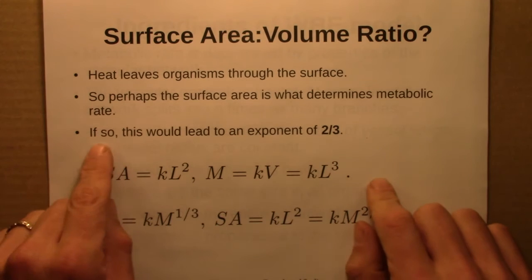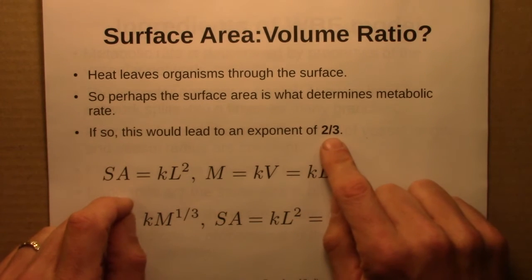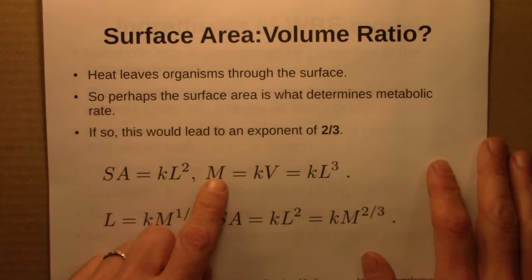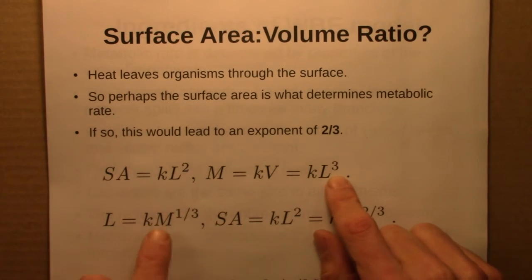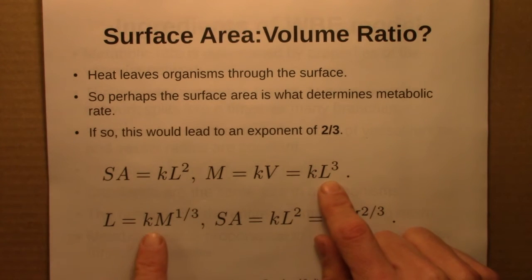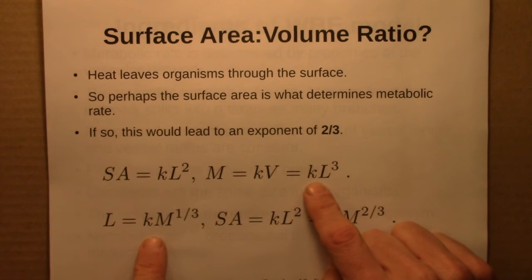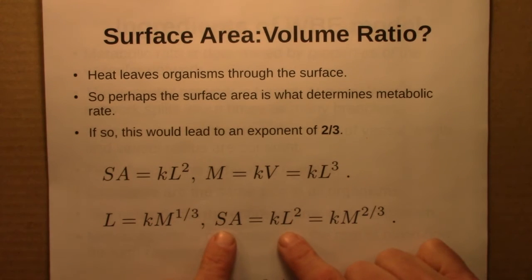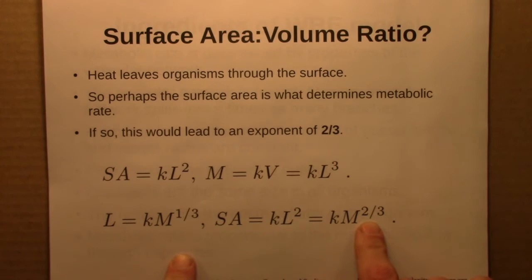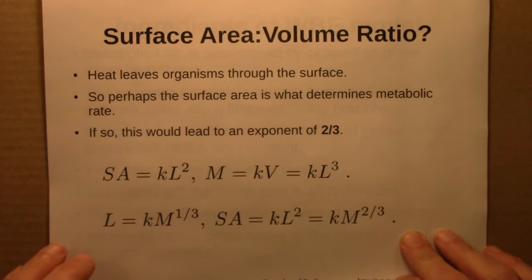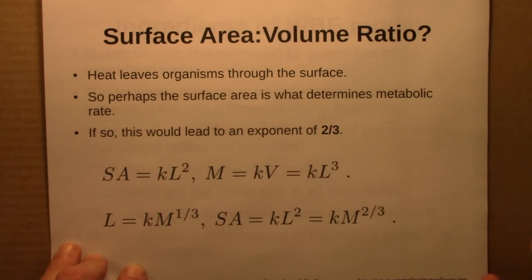That certainly seems like a sensible idea. But if so, it would lead to an exponent of two-thirds, not three-quarters. Surface area scales as L squared, and mass is proportional to volume, proportional to L cubed. Taking the cube root gives L proportional to M to the one-third. Plugging that into surface area proportional to L squared gives M to the two-thirds power. So one would expect an exponent of two-thirds, yet that's not what Kleiber's law gives us — that's a mystery.